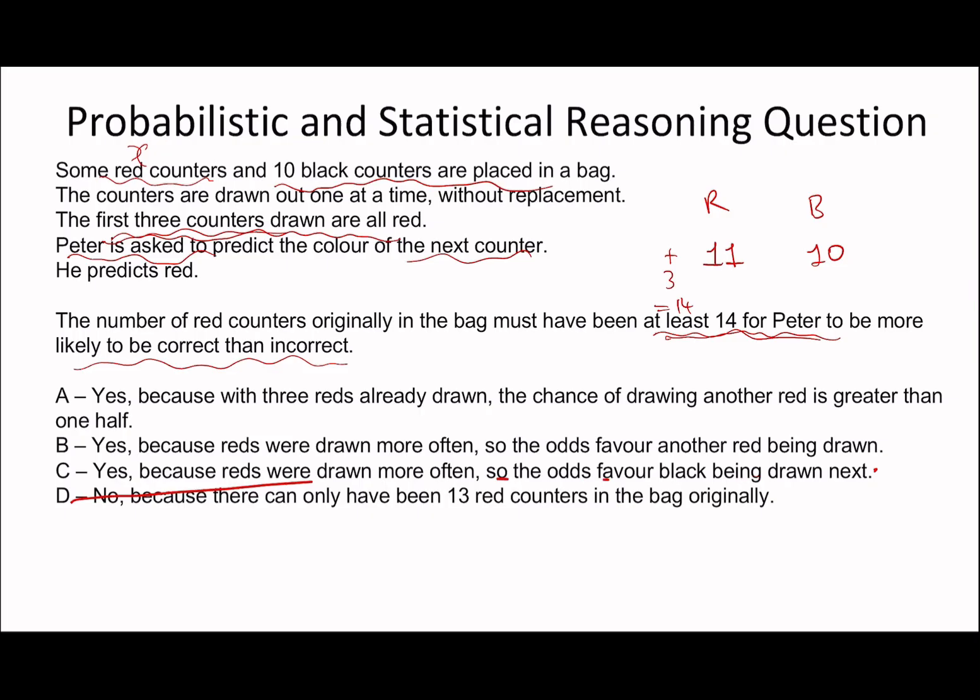We can basically only rule out D with this. Let's read the other options. C says because reds are drawn more often, so the odds favor black being drawn next. That's not relevant. B says yes, because reds are drawn more often, so the odds favor another red being drawn. Once again, not relevant. A says yes, because with three reds already drawn, the chance of drawing another red is greater than one half. Exactly. It's because if you need it to be more likely, that means they have to have more reds than blacks, and the only way for that to happen is if you have at least 11. So A is the correct answer here.